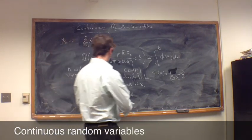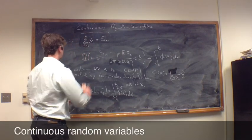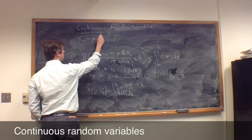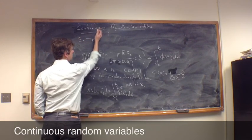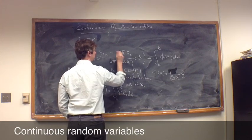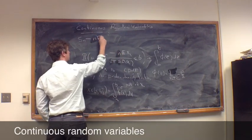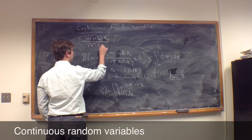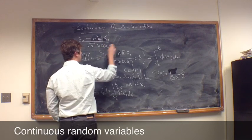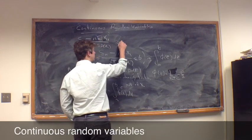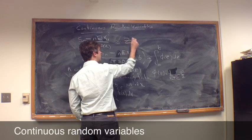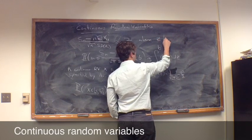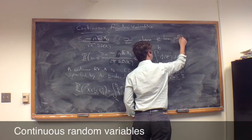So, in a way, what this is really saying, this statement above here, is really a statement that the random variable Sn minus n times expected value of x1 over square root of n times standard deviation of x1. It says that this random variable here is approximated well by a new random variable z.